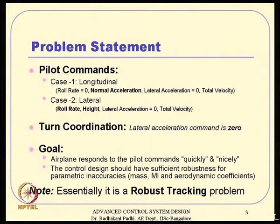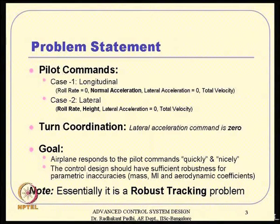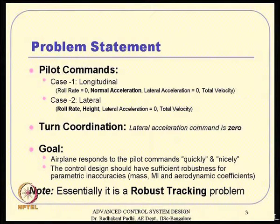We will confine ourselves primarily to these two modes. In the longitudinal command, the pilot gives some sort of normal acceleration command as the primary input, and can also give total velocity command. While executing this, we will also ensure that roll rate remains as close to 0 as possible, and lateral acceleration also remains 0. Roll rate is 0 primarily because we are not interested in lateral commands, and lateral acceleration is 0 to avoid induced drag.